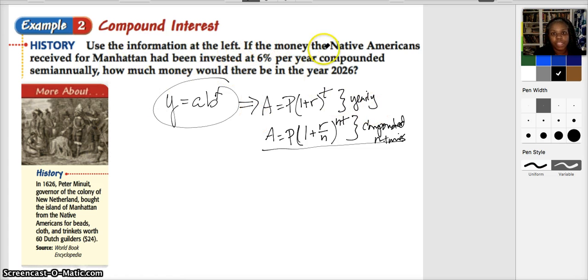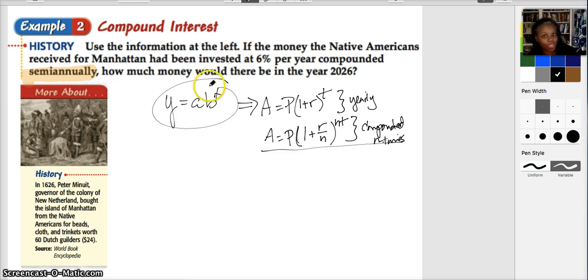So we're going to use the information over here. If the money that the Native Americans received for Manhattan had been invested at 6% per year, compounded semi-annually, how much money would there be in 2026? Semi-annually means twice per year. So let's go ahead and figure out what we have. The amount is what we're looking for, is equal to the principal. The principal would be the amount that they were paid, and if we go look down here, we see that it's approximately $24. So the amount is equal to the principal 24 times 1 plus the rate.